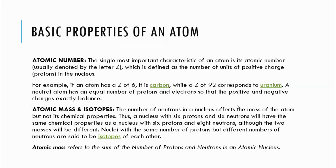Now, discussing the atom as a subject: the atomic number. You already know you have protons and neutrons in the nucleus, with electrons revolving around it. The number of protons present in an atom is the atomic number, and it is represented by the letter Z. For example, if an atom has Z equal to six, that is the number of protons.